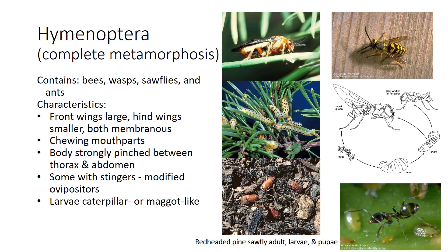Hymenoptera means membrane wing, referring to the mostly membranous wings with few veins. They typically have large front wings and smaller hind wings connected with little hooks. This order contains bees, wasps, sawflies, and ants. Characteristics include chewing mouthparts, a body strongly pinched between the thorax and abdomen, and stingers which are modified ovipositors. Many hymenopterans are social with distinct caste systems. While many are beneficial as pollinators, some are plant pests such as sawfly larvae, which resemble caterpillars. Ants can be a problem when they farm soft-bodied plant pests such as aphids to harvest the honeydew — concentrated sugar waste that the pest produces. Many species of wasps are parasitoids and naturally control other insect species.